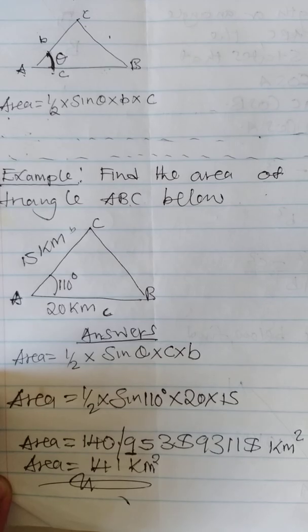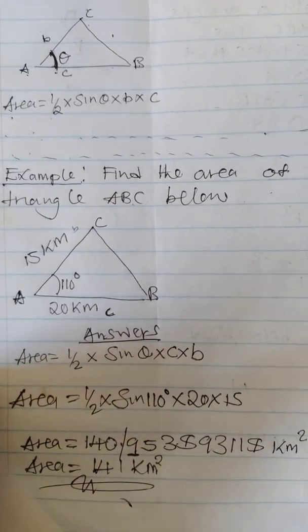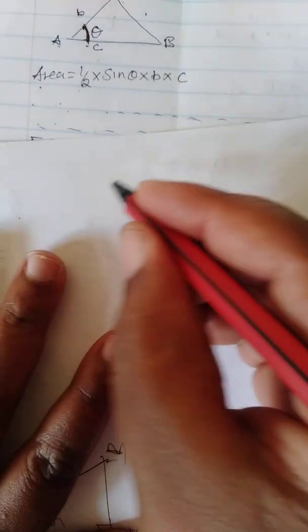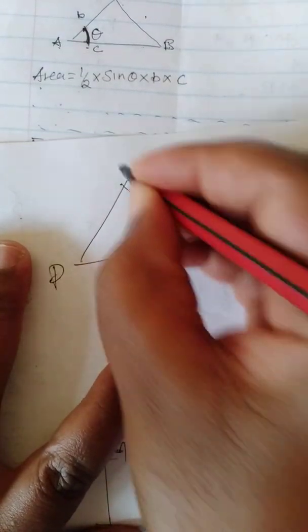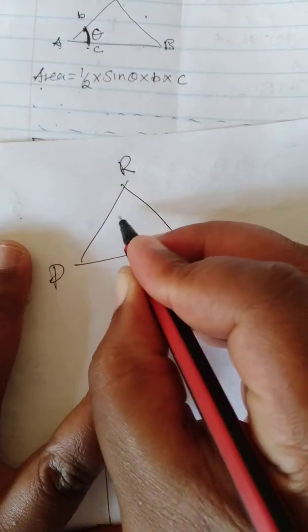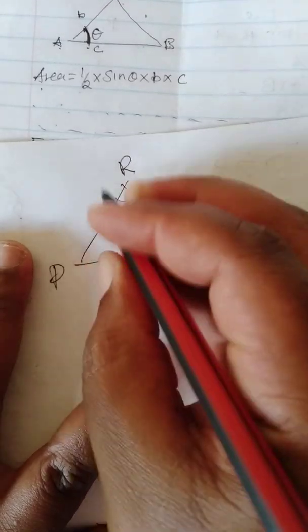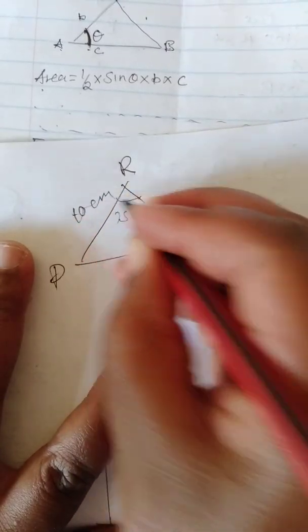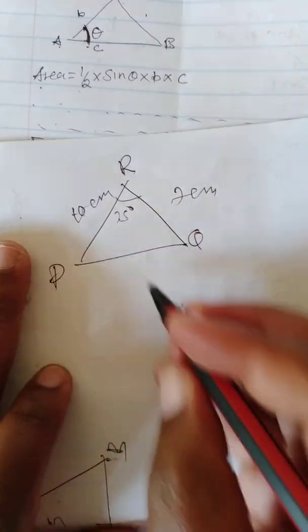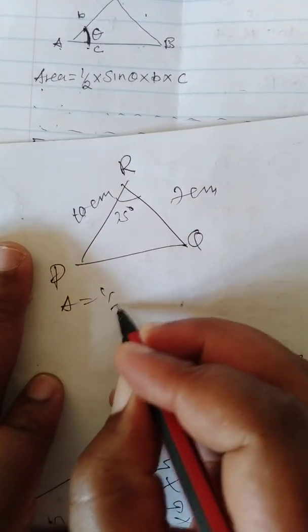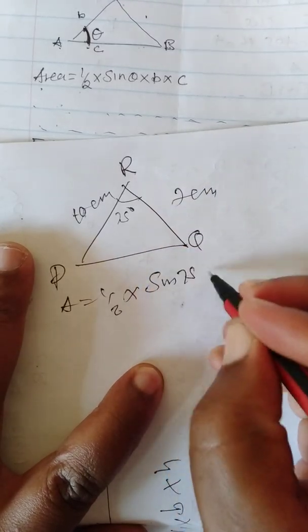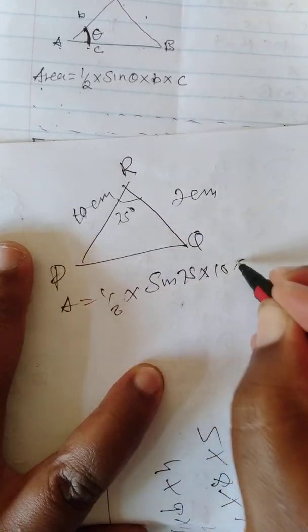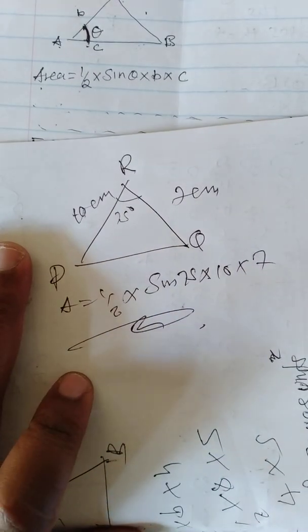If you have a triangle like this, PQR, where this is 75 degrees, this is 10 meters, and this is 17 meters, to get this area I'm going to say area is half times sine of 75 degrees times 10 times 17. You work it out and get your area.